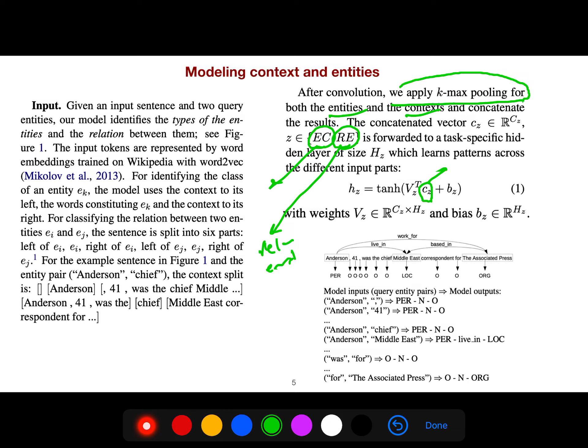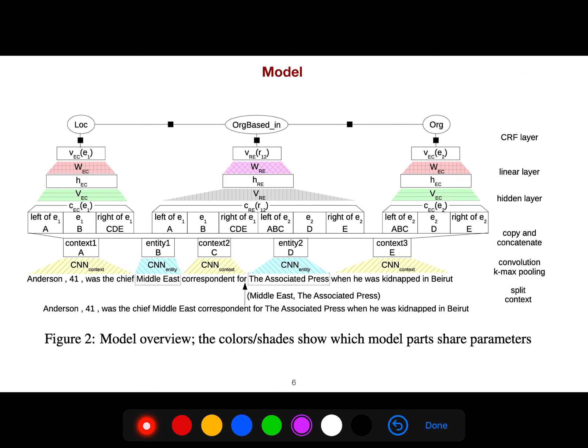We're learning the weights V_z and bias b_z for the hidden layer. These parameters are task-specific.